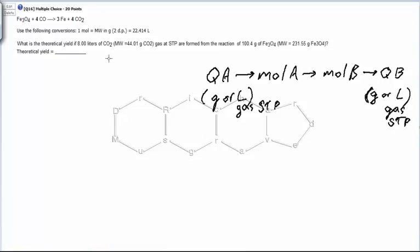We're looking at a theoretical yield problem. What is the theoretical yield of 8.00 liters of CO2 gas at STP formed from a reaction of 100.4 grams of Fe3O4?